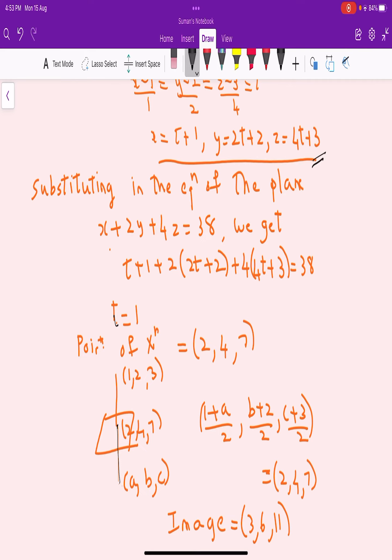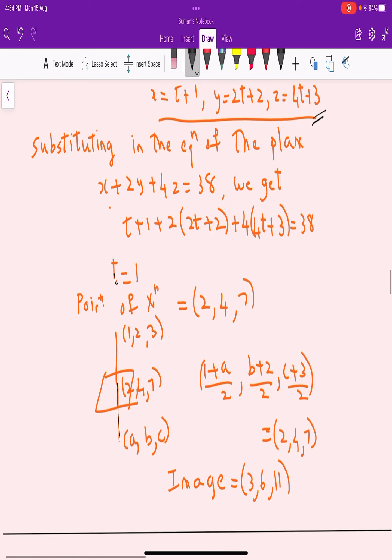Using the midpoint formula, if we call the image (a, b, c), we get (1+a)/2 = 2, (2+b)/2 = 4, (3+c)/2 = 7. So the image will be (3, 6, 11).